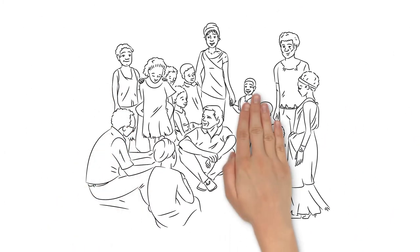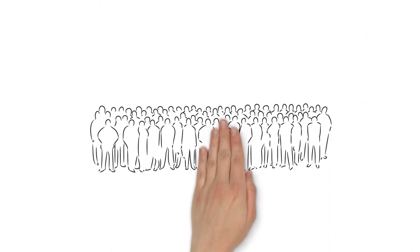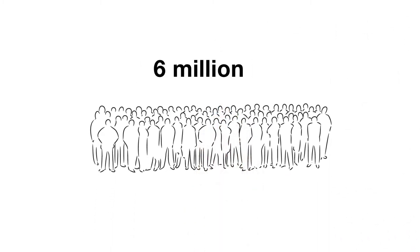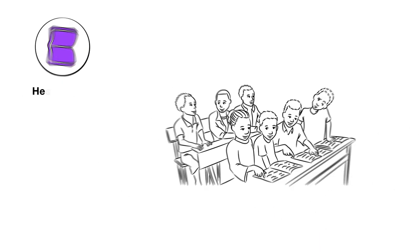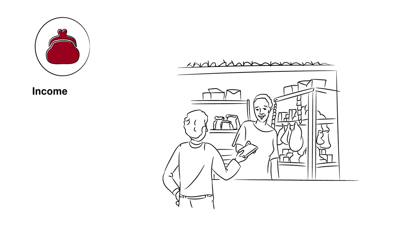At this point, we have improved the living conditions of 6 million people in the highly important areas of water, agriculture, education, health and income.